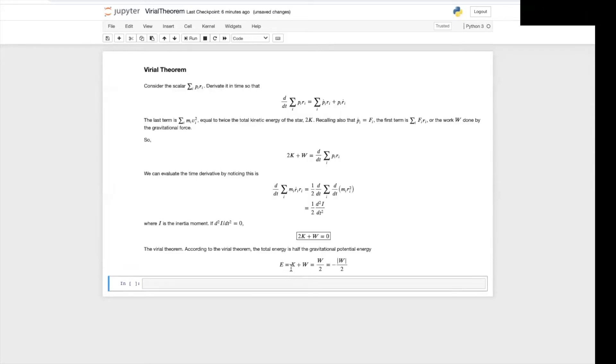Because you can write the energy being equal to the kinetic energy plus the potential energy, substitute the Virial theorem here k being minus omega over 2, and then have the total energy equal to half the gravitational potential energy.